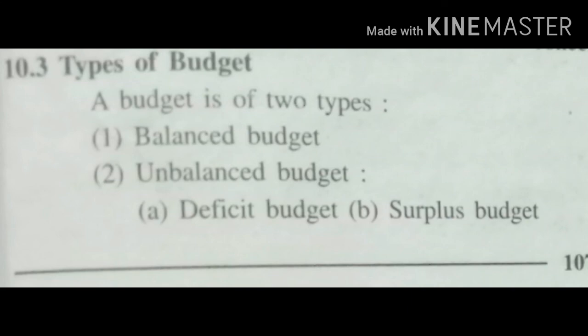Let us learn about the types of budget. A budget is of two types: balanced budget and unbalanced budget. Unbalanced budgets are of two types: deficit budget and surplus budget. We will be learning about these in detail in the next session.